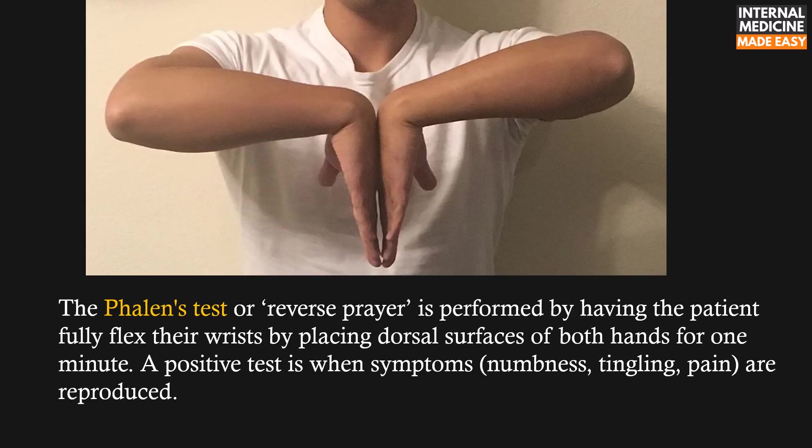The Phalen's test or reverse prayer is performed by having the patient fully flex their wrists by placing the dorsal surfaces of both hands together for one minute. A positive test is when symptoms such as numbness, tingling, or pain are reproduced. This is the best of the tests.